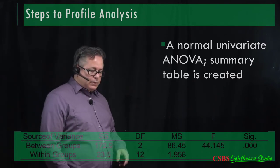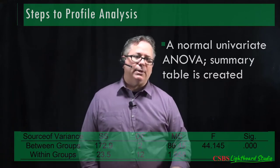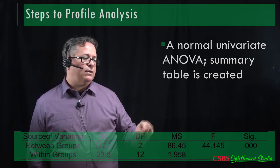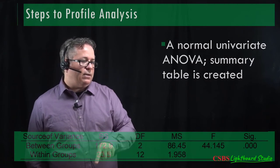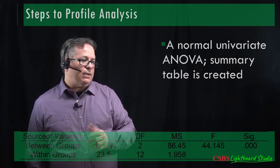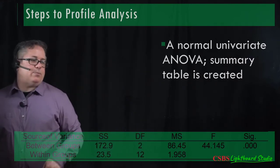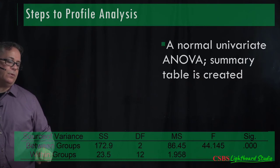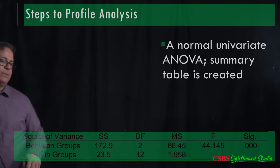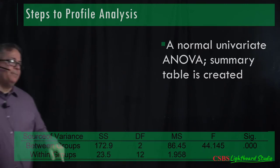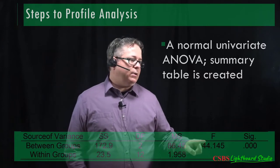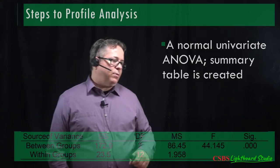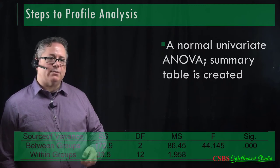In SPSS output from a mixed ANOVA, you'd see a between-subjects table separate from within-subjects. These values appear in the between-groups effect — labeled something like 'profession' — and you use the F to test for significance. An F of 44.145 is huge, so questions about the equal levels part?